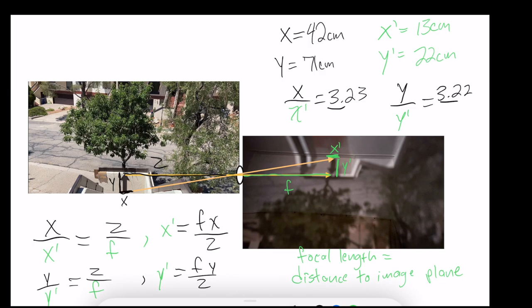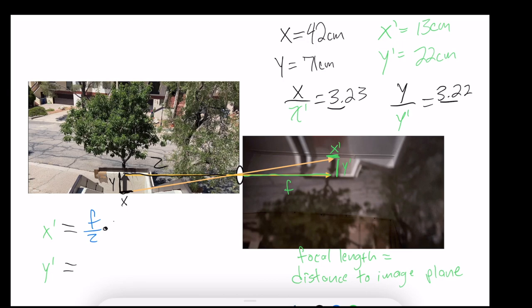And to make it a little more obvious, I'm going to write X prime equal to F divided by Z times X, and I'm going to write Y prime equal to F divided by Z times Y.